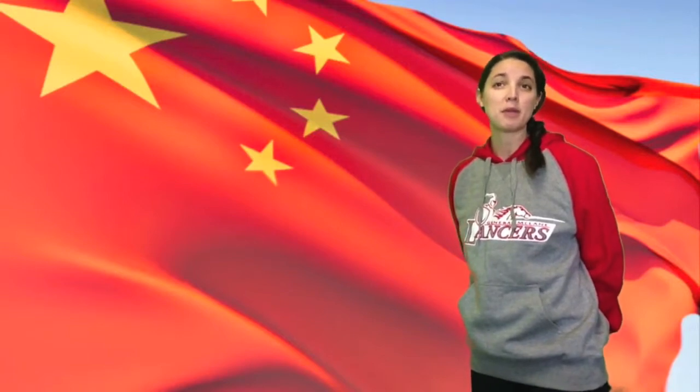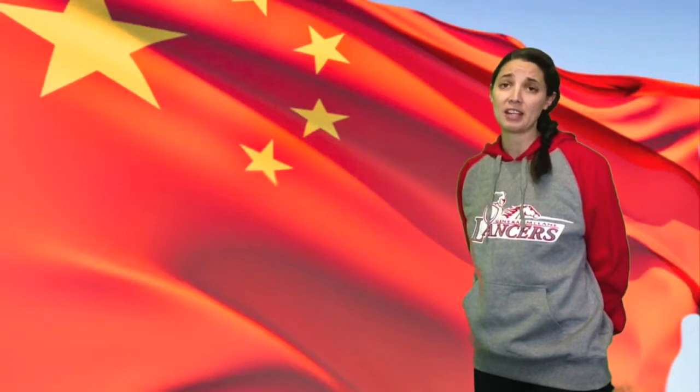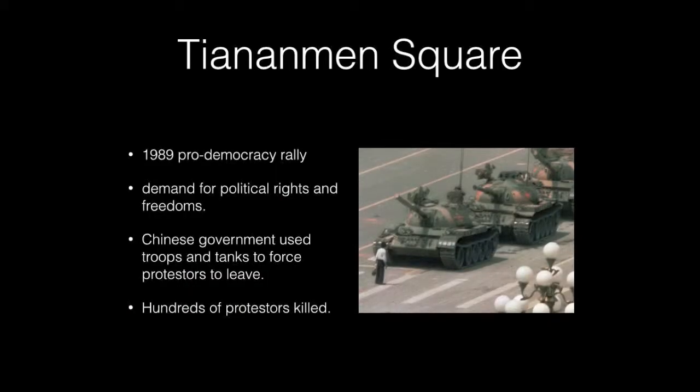Economic freedom has led to more political freedom in China. However, the communist government controls most areas of life, including newspapers, television stations, and internet access, which inhibits the spread of information and ideas. China harshly punishes people who oppose the government. One example happened in 1989 when more than 3,000 pro-democracy protesters gathered at Tiananmen Square in Beijing, demanding more political rights and freedoms. When the protesters refused to leave, the government brought in troops and tanks. Hundreds of protesters were killed, and more were injured or imprisoned.